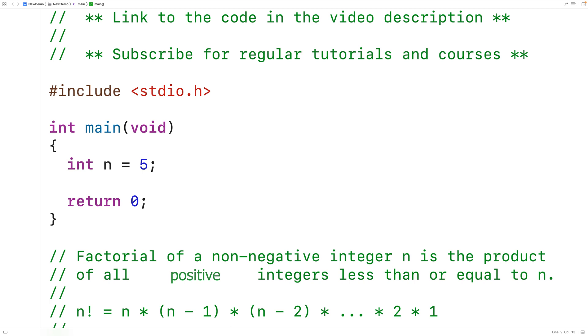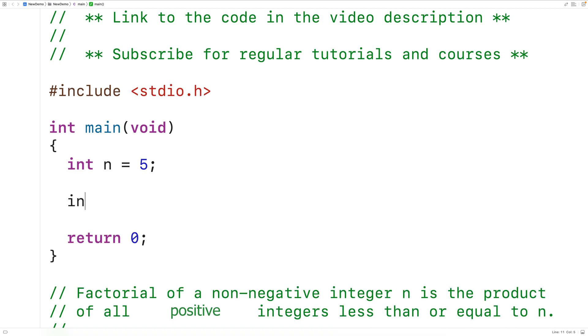What we need to do is calculate the product of all the integers between n and 1. So what we'll do is declare another variable called product, and we'll initialize product to 1. Because 1 multiplied by any value will just give us back that value, we're going to use the product variable to build up the factorial, one multiplication at a time. We'll have a loop perform these multiplications.